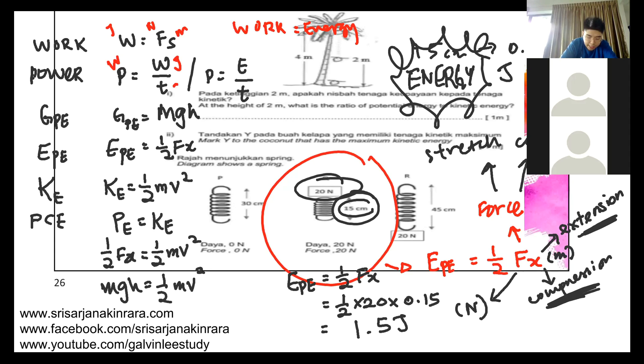Next, potential energy. You got two types of potential energy: GPE and EPE. GPE is gravitational potential energy, only when an object is at a height. So you have GPE equals mgh. GPE again in joules, mass is in kg, g you must know is always 10, and h is the height in meters.